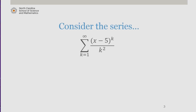Consider the series: the sum from k equals 1 to infinity of (x minus 5) to the k over k squared. What are the radius and interval of convergence of this power series?